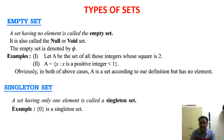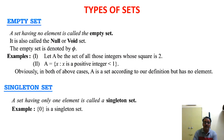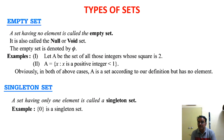The next type is the singleton set. Single means 1, so it is a set which has a single element. For example, {0} is a singleton set because the only element is 0. From the earlier example, if x is a positive integer less than 2, then there will be one element possible — that is 1 — so that would become a singleton set.